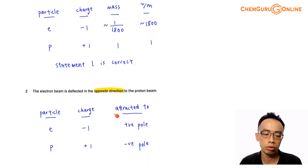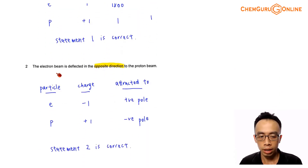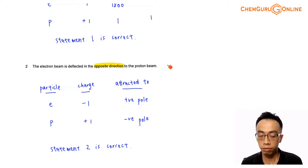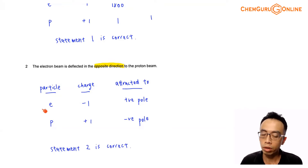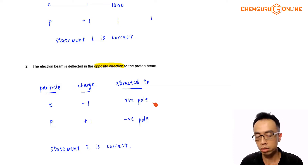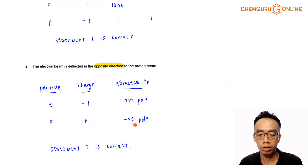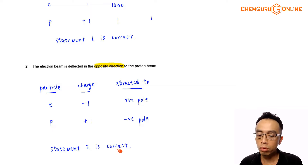Statement 2: the electron beam is deflected in the opposite direction to the proton beam. This is again fairly straightforward because the electron and proton have different charges, so they will be deflected towards different poles. The electron, being negatively charged, is deflected towards the positive electrode, while the proton, being positively charged, is deflected towards the negative electrode. So statement 2 is correct.